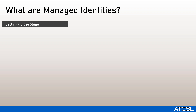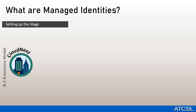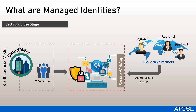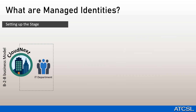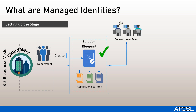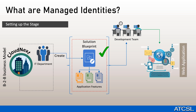It is better to understand managed identities with an example. Consider there is an organization, Cloudnext, which has a B2B business model and multiple partners. The IT department at Cloudnext is planning to build a secure internet application on Azure to have an online presence in order to ease up and expand their areas and regions of business. As a first step, they create a blueprint of the application followed by the architecture. The solution looks promising with multiple features, and a team of developers start to build the application modules.